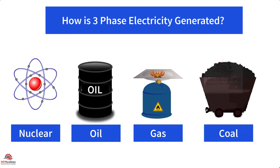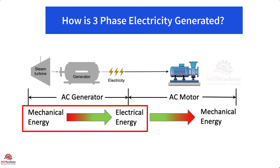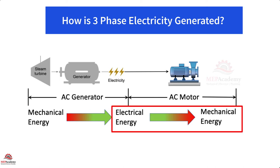AC generators convert mechanical energy into electrical energy, while the AC motor does the opposite. It converts the electrical energy into mechanical energy, like turning the motor shaft of a pump or fan.